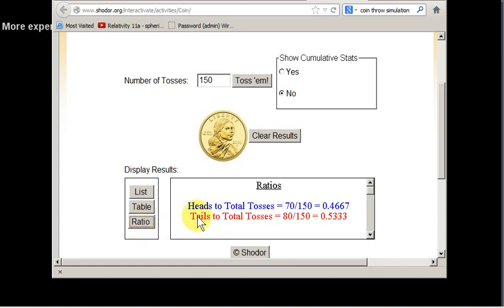If you click on ratio, you can get the relative frequency. That's the frequency of heads divided by the number of tosses. And you can see it's 0.4667.